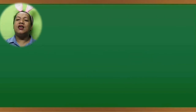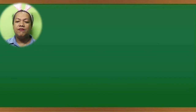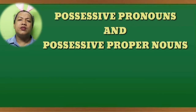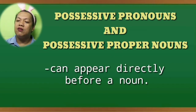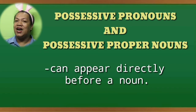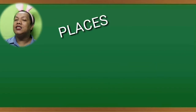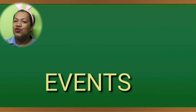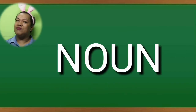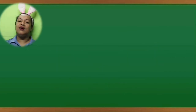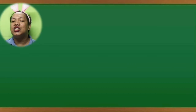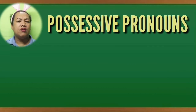Also notice that just like articles and demonstrators, possessive pronouns and possessive proper nouns can appear directly before a noun — a name of a place or person. We will now discuss separately what possessive pronouns are.